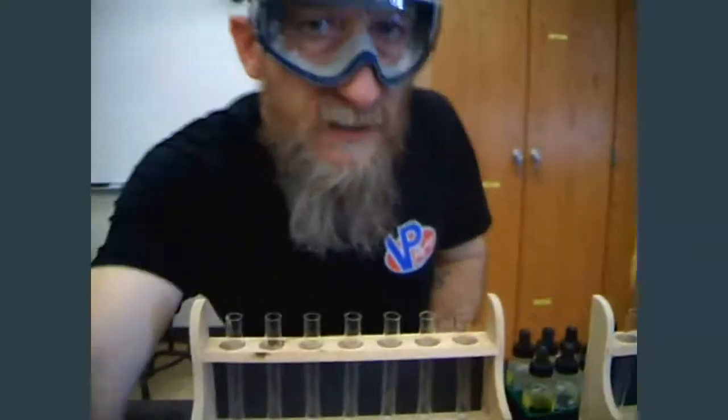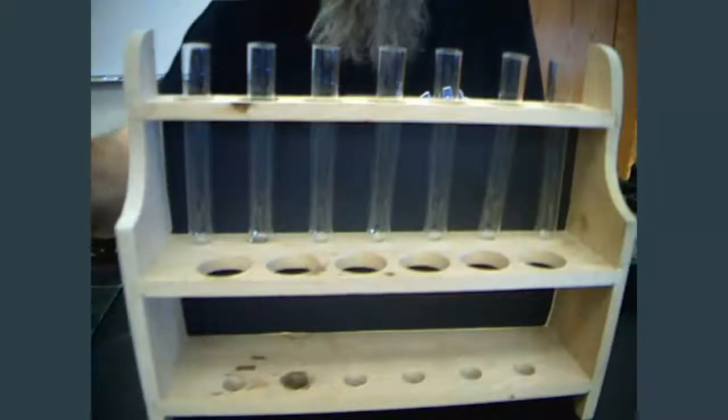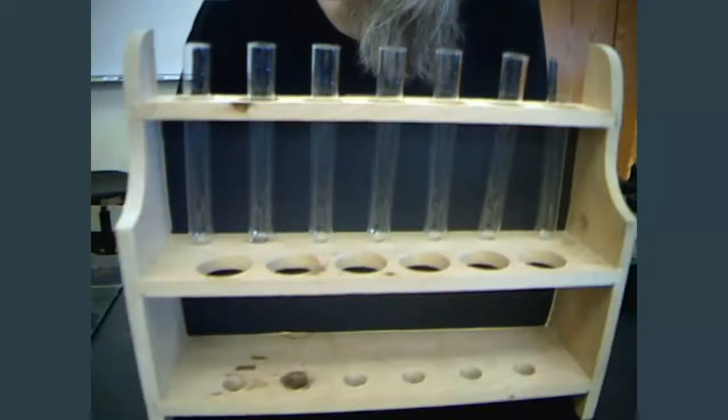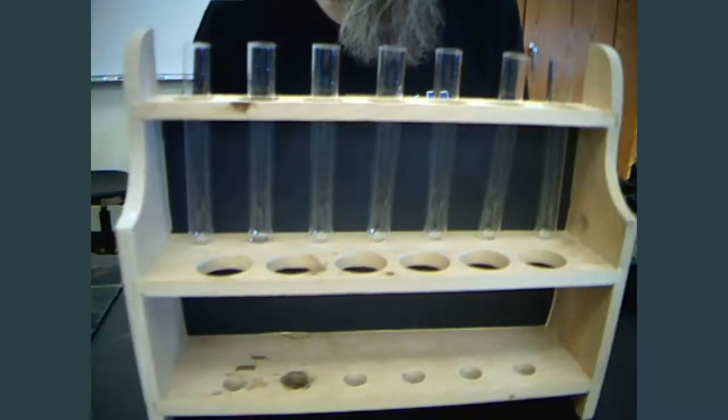Let me zoom in here on the test tube rack. I put some black construction paper behind each of the test tube racks because a lot of these are going to be a white-colored precipitate, and I thought it would show up a little bit better.